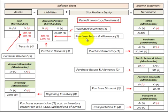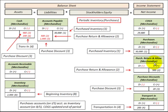Say we had a purchase return and allowance — returning $500 worth of material. We reduce accounts payable by $500, and then we increase our purchase return and allowance account by $500. This purchase return and allowance is a contra expense account for purchases, so an increase in the purchase return and allowance reduces our purchases expense by that amount.